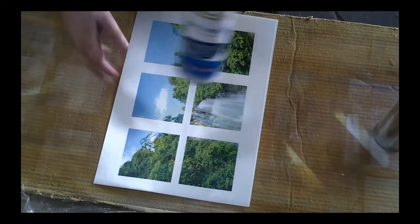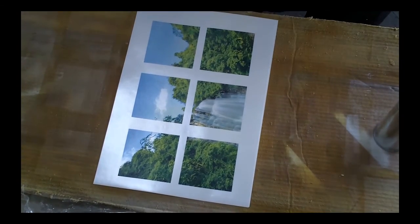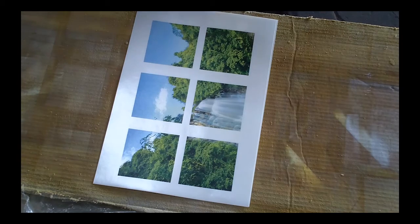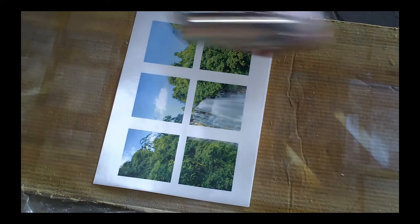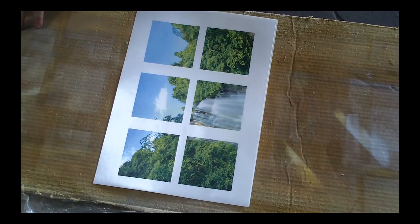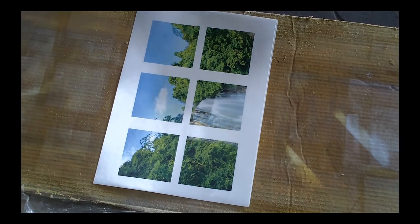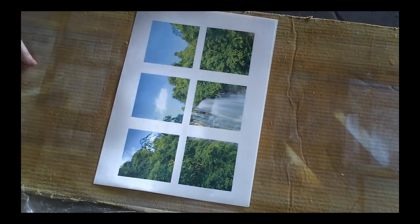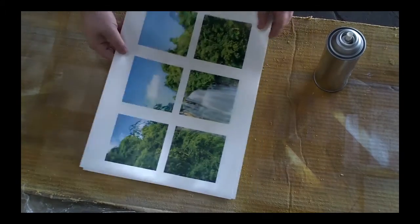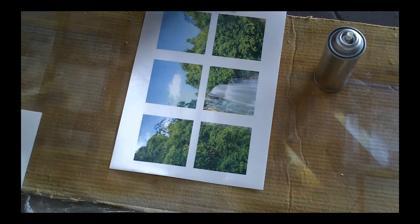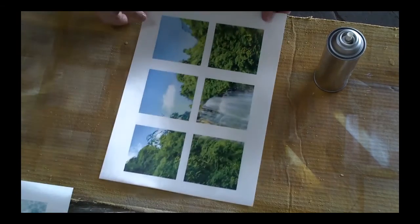Next when we have the print we just need to apply some cover coat to it. Now make sure you shake the can. Make sure everything is mixed up in there. Now you want to do this on a surface that, as you can see I'm just using some cardboard. You just need something that you can spray because you can go off the edges with it.